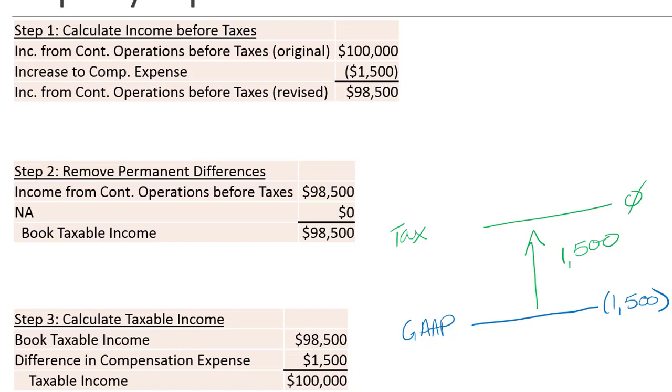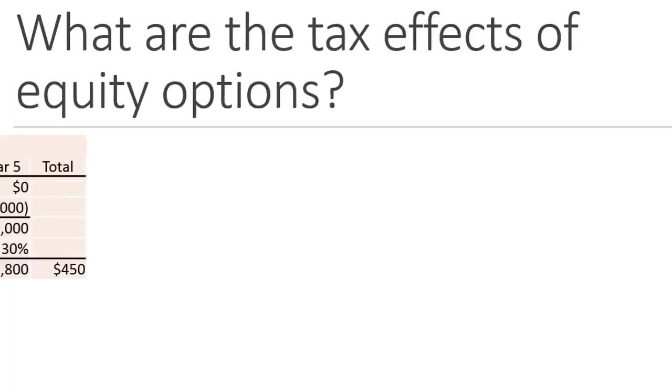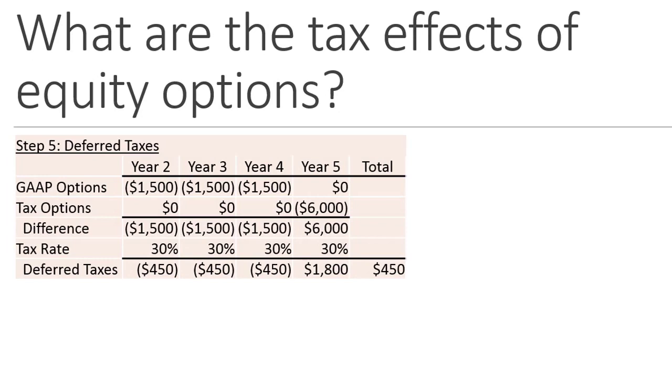Where we do see a change is when we get into step five. Step four, we multiply by a tax rate. We don't have that information, so we don't worry about it. But in step five, I would create a deferred tax table. I'm in year one, so I'm only looking at years two, three, and four when she keeps earning the options, and then in year five when we think she'll use them. So there's the two, three, and four, that $1,500, the rest of the $6,000 divvied up over these last three years, and then there's the $6,000 we'll use. We multiply by the tax rate. I just kept it constant. So we end up with a total deferred tax of $450.